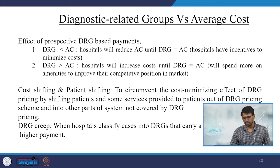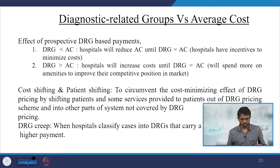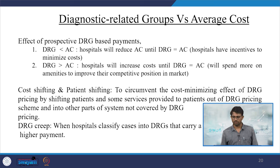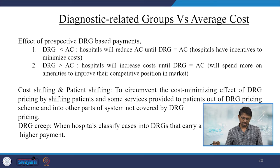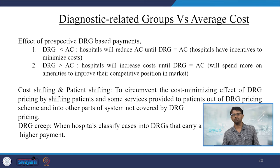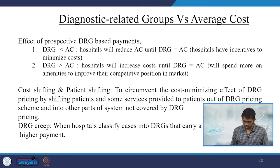Comparing DRG versus average cost: when DRG is less than average cost, hospitals will reduce average cost until DRG equals average cost — meaning hospitals have an incentive to minimize cost. Conversely, if DRG exceeds average cost, hospitals will increase costs until DRG equals average cost, meaning hospitals will spend more on amenities to improve their competitive position in the market.